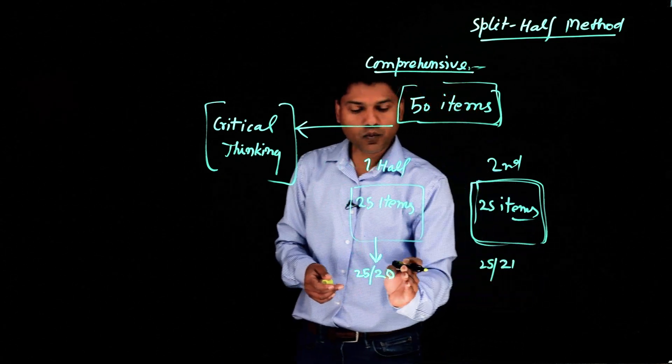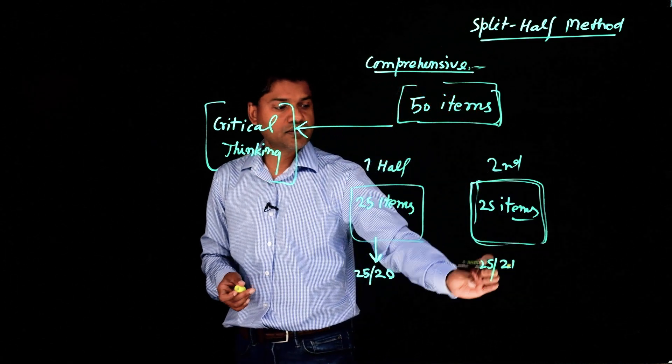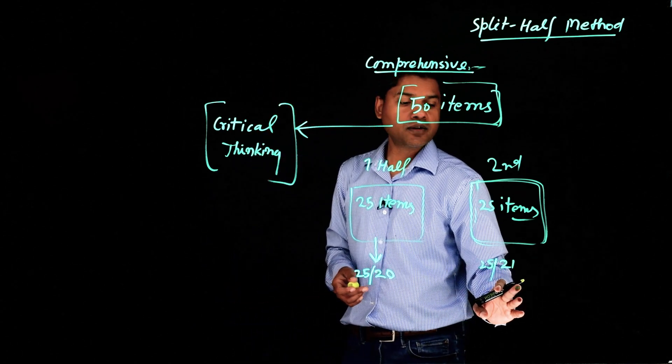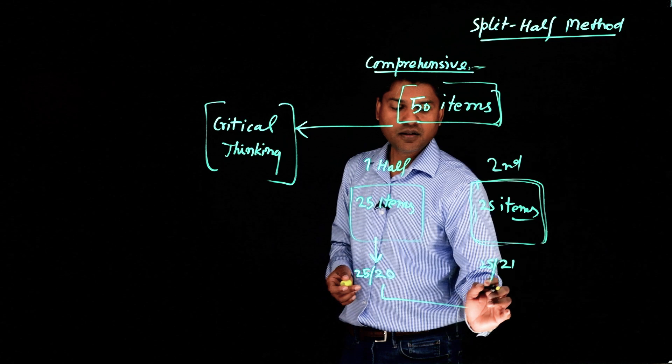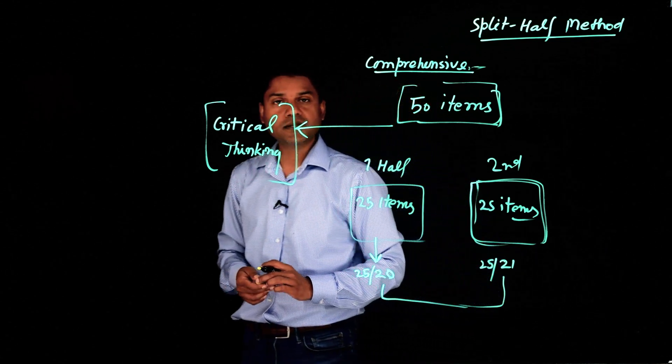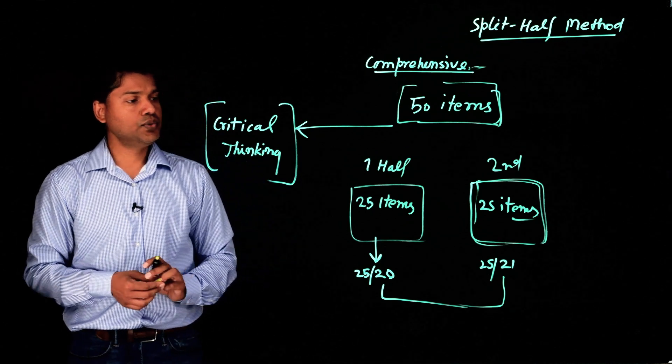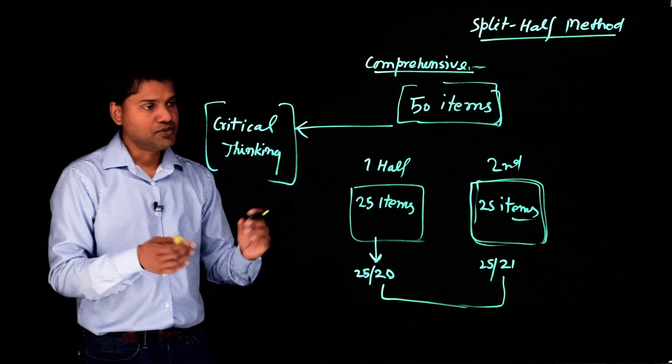Now we see the consistency between these two scores, and you could see 20, 21, which is pretty close. So in this case, we say there is high consistency, high reliability between these two halves of the same test.